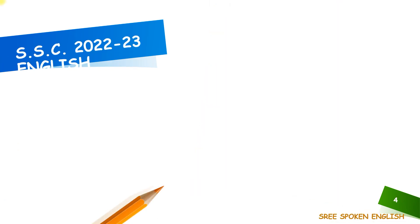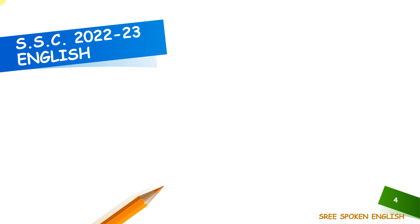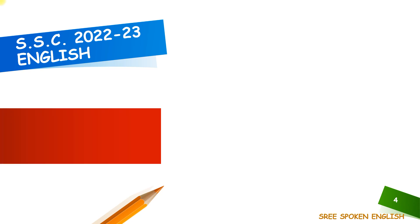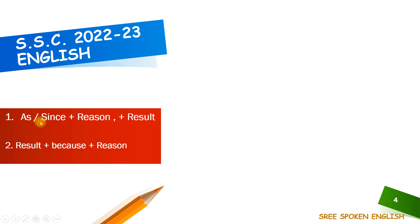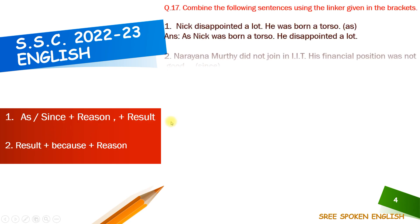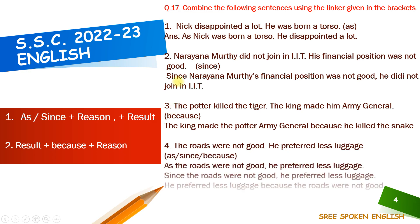So friends, in this way, we can use these three linkers: as, since, because. Let us look at how questions will be asked from the examination point of view. Remember, friends, this is the structure: for as and since, we need to write the reason first, after that the result.